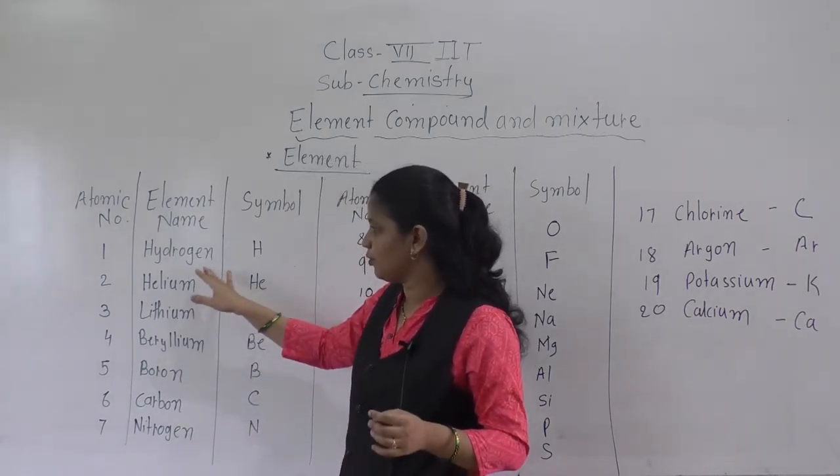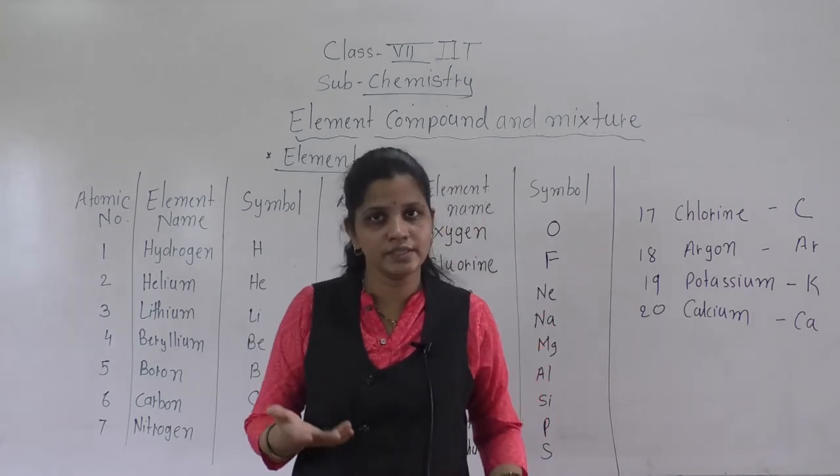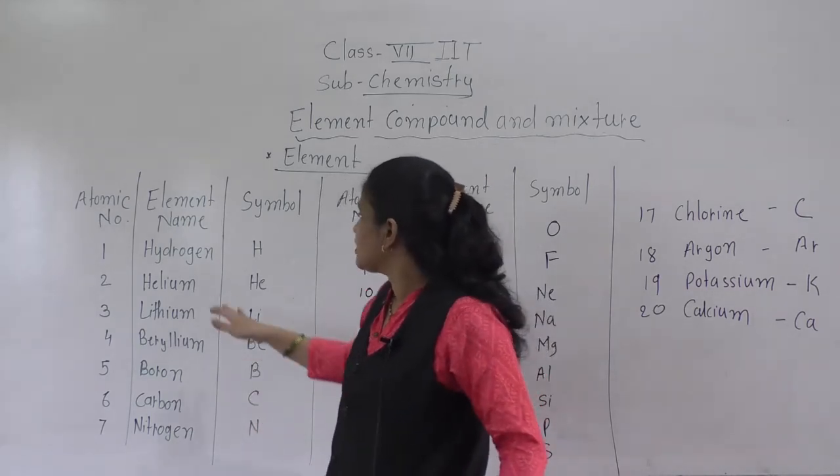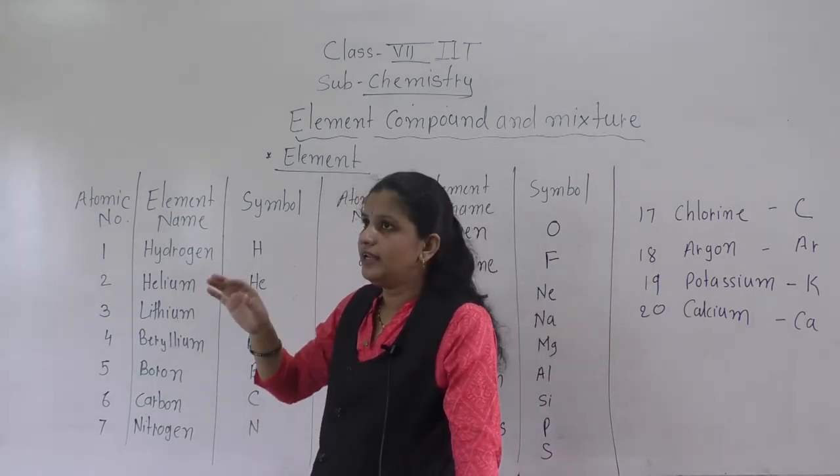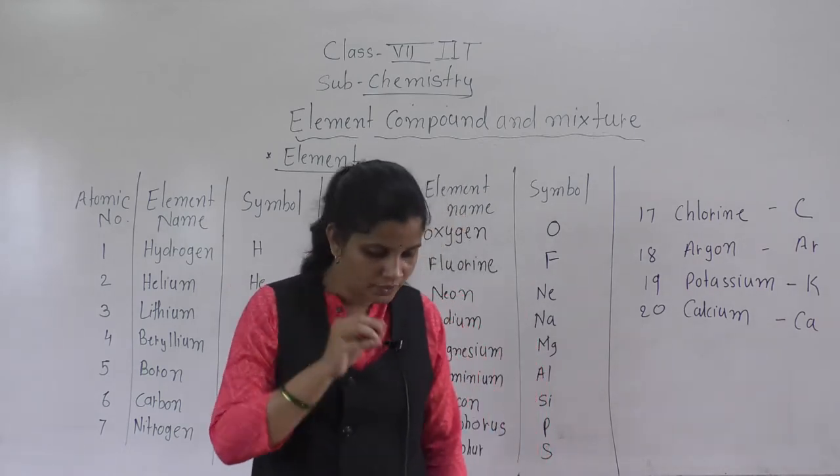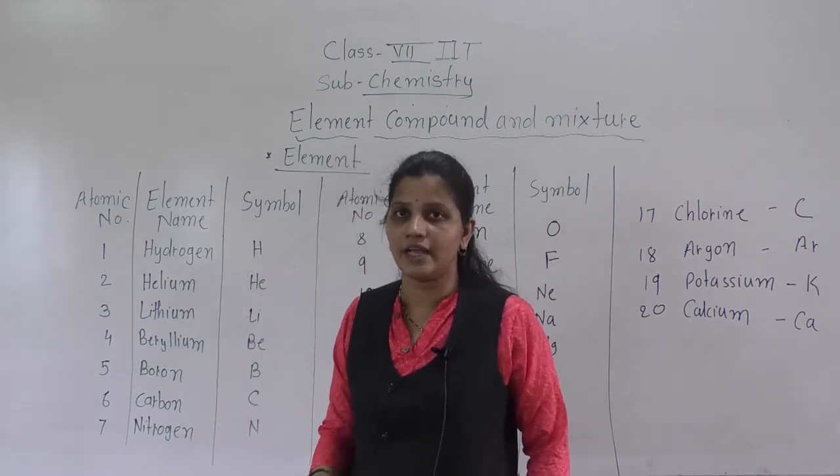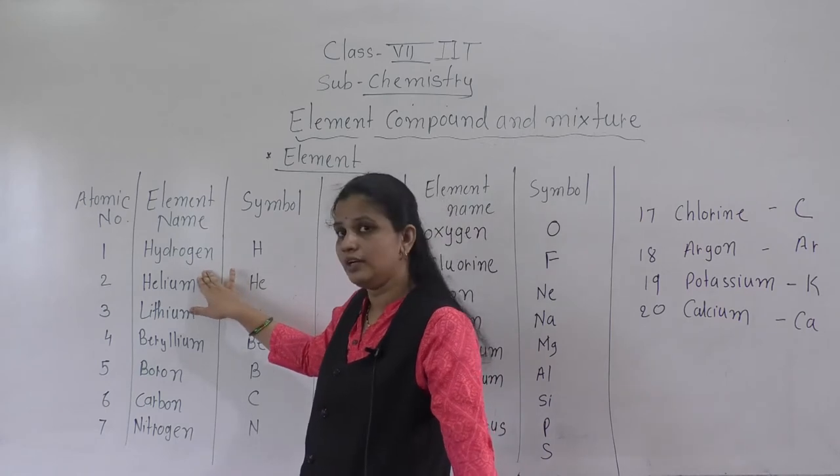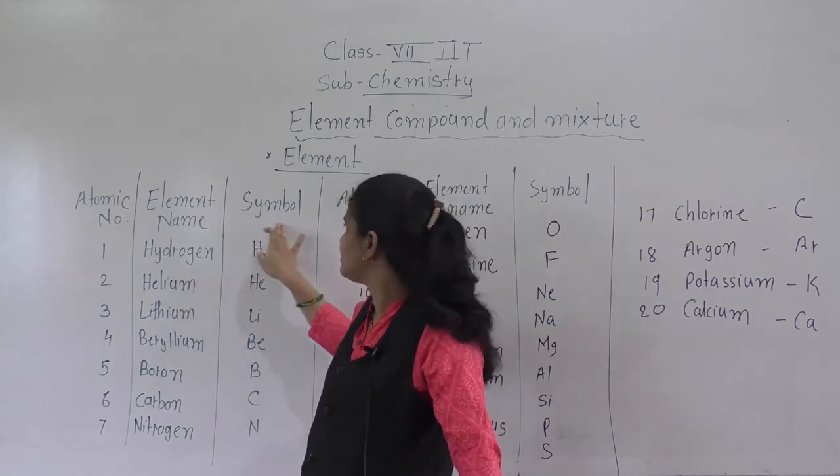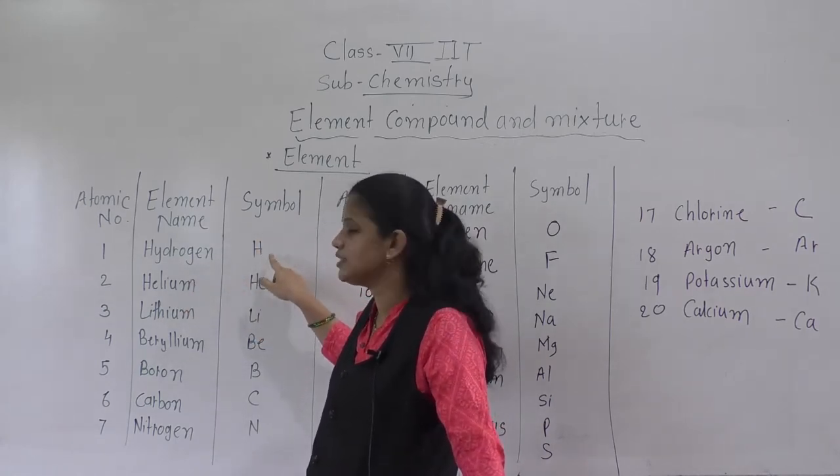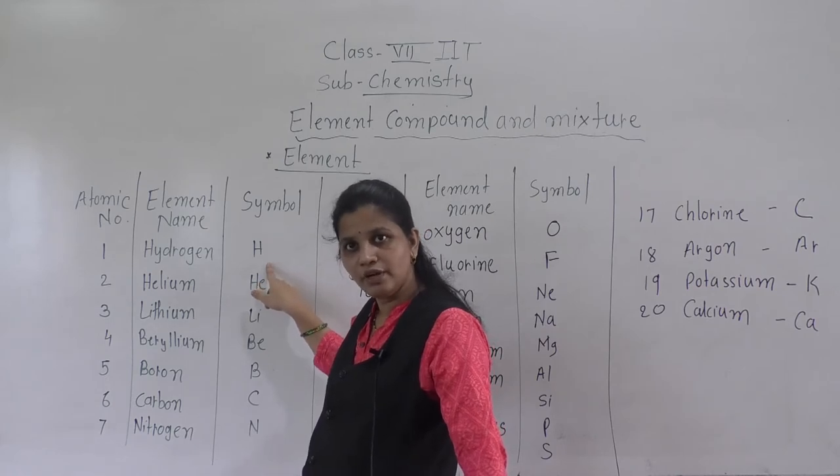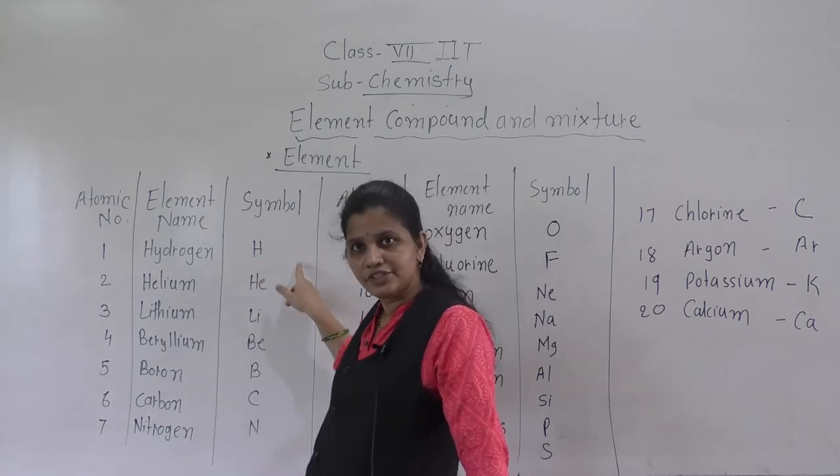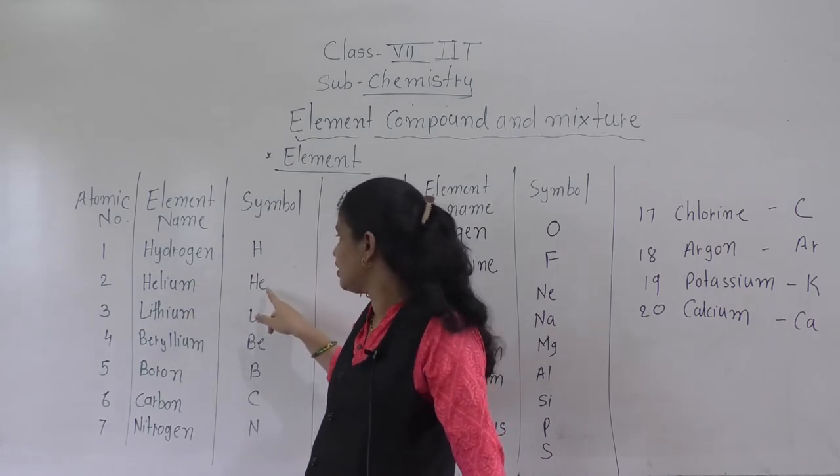See here, hydrogen. Hydrogen is a gas. While writing in the equation, in a chemical reaction, the hydrogen we will not write. Instead of hydrogen, this symbol, see, hydrogen symbol is H. H means what? Whenever we write H, that H means hydrogen.